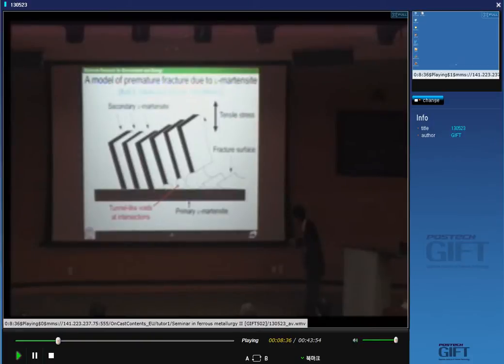As you can easily consider, this position has highly stressed local stress conditions. Then you may have voids at the tip or cross section of two plates. It makes a tunnel-like void at the intersection. This is a model for premature fracture.